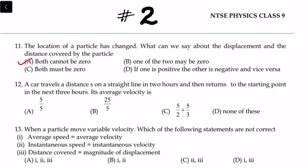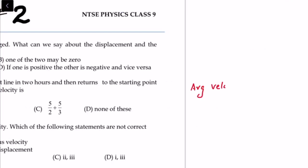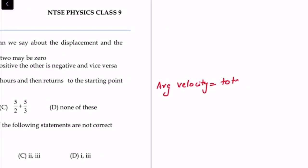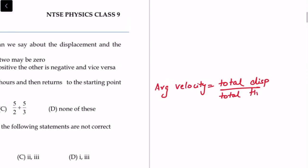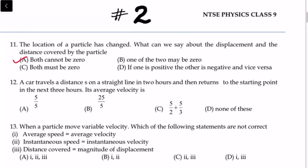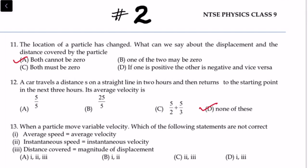Question number 12: A car travels a distance S on a straight line in two hours, then returns to the starting point in the next three hours. The average velocity is? Since the car returns to the same point, total displacement is zero. Zero divided by any time gives zero, so the average velocity is zero meters per second. The answer is none of these (as given options may not list zero explicitly).